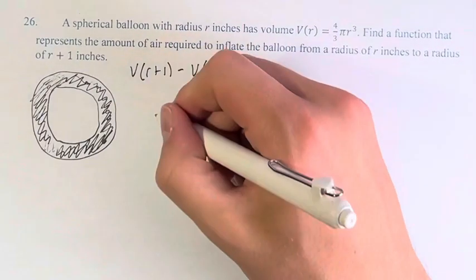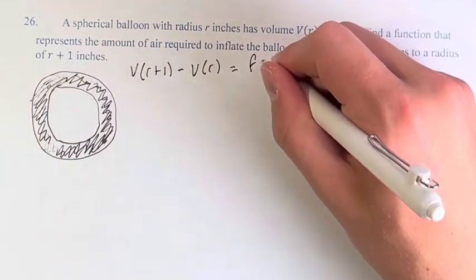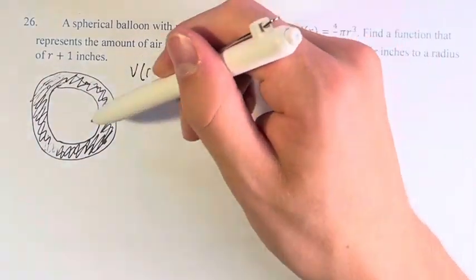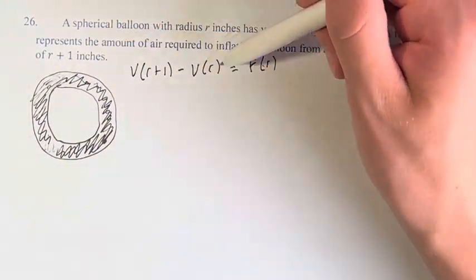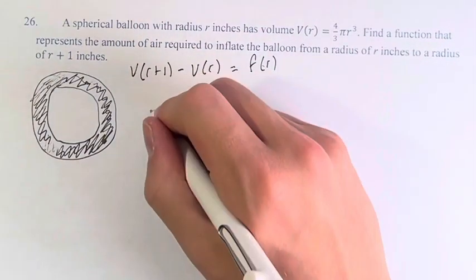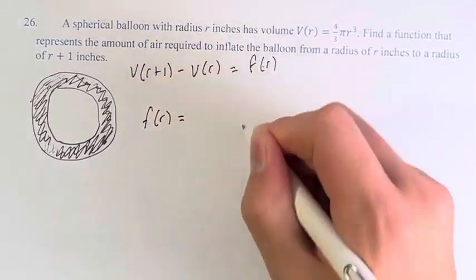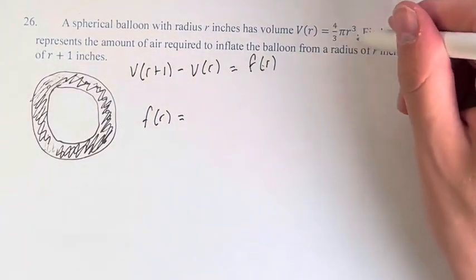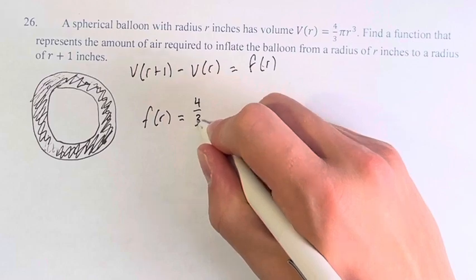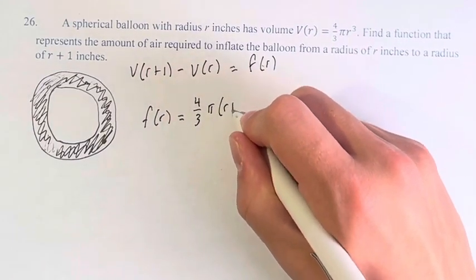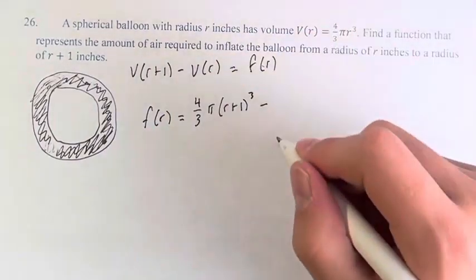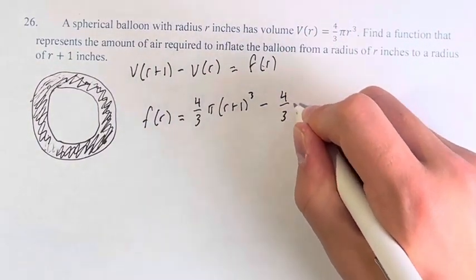So our function, f(r), as I'll just call it that, can be equal to the volume of the big sphere minus the volume of the little sphere. So f(r) is equal to, what is V(r+1)? Well, you just have to plug in r plus 1 here: 4/3 π (r+1) cubed minus V(r), we just know, 4/3 π r cubed.